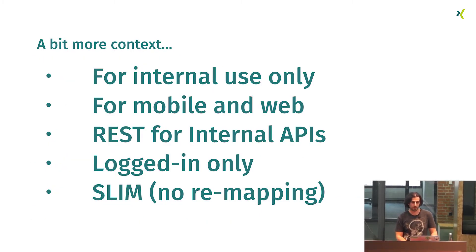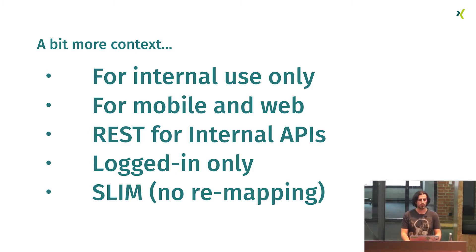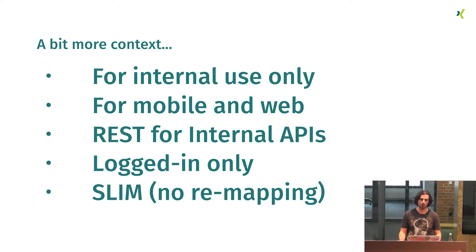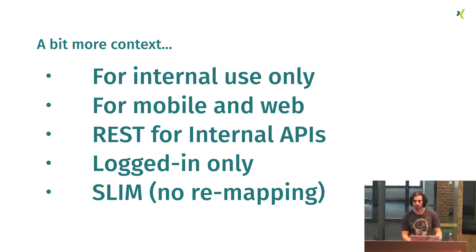A bit more context before going into the technical part. Our proxy is meant to be used internally only — it's only for mobile and web, so no inter-backend communication. We still use REST as the primary way to expose internal APIs. We don't expose the schema for unauthenticated requests, so you have to be authenticated as a specific user. And the idea on our project is to keep it as slim as possible — we don't want to do any remapping between backend and frontend naming. If you want to use a different name on the frontend, you can use an alias.